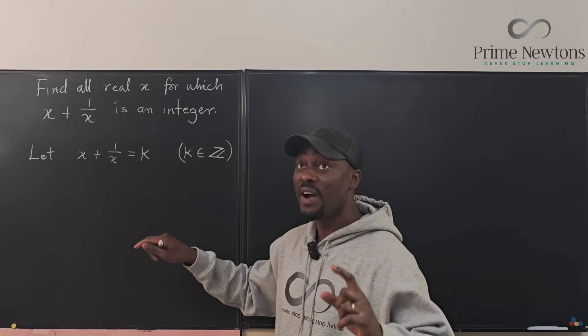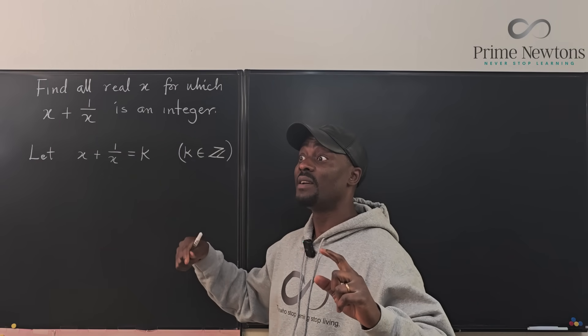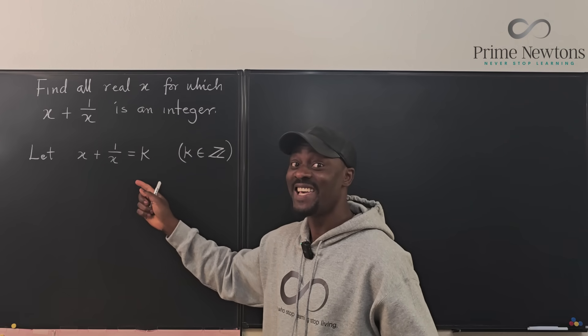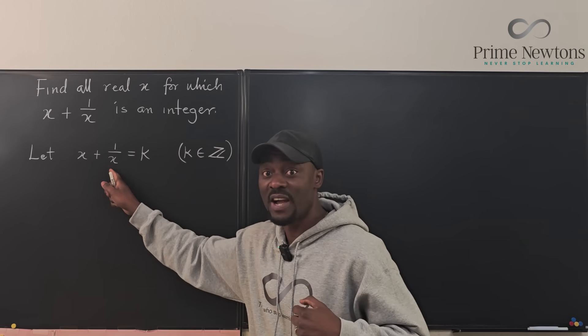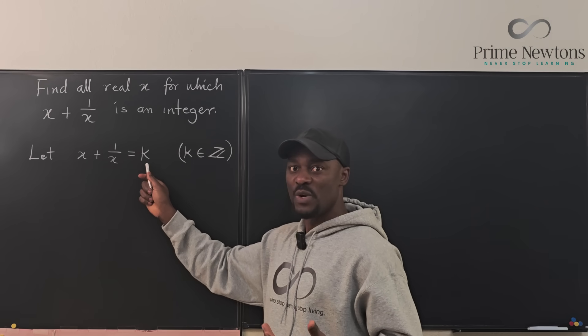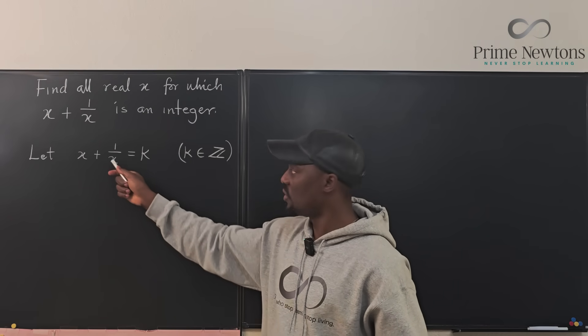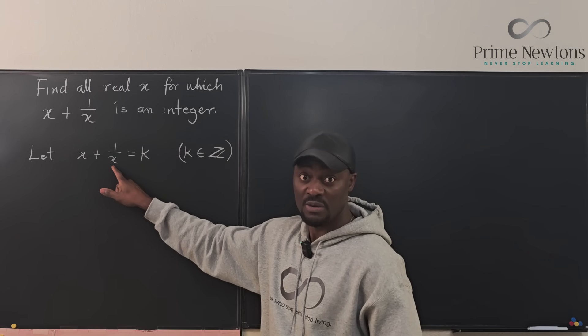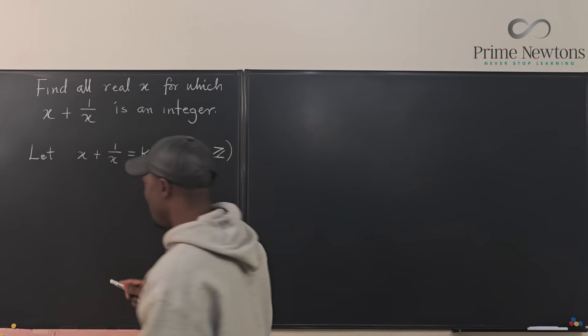From here, we're trying to find the values of x. We don't even know what k is, but we're trying to find x. So in a situation like this, assuming we knew what k was, to find x you just make a quadratic out of this by multiplying every term by x to get rid of this denominator.